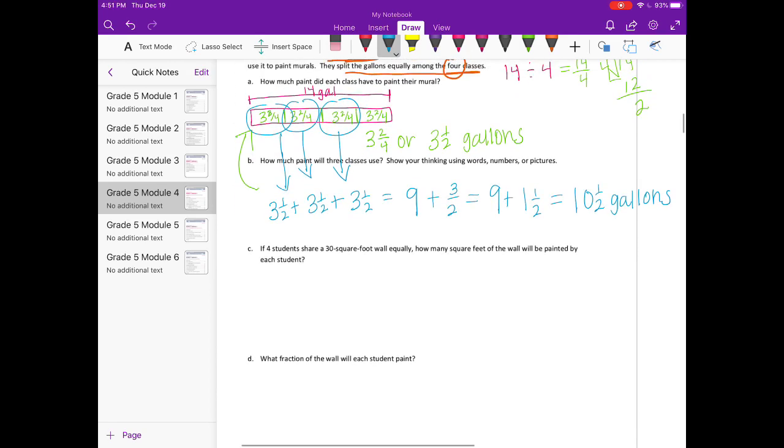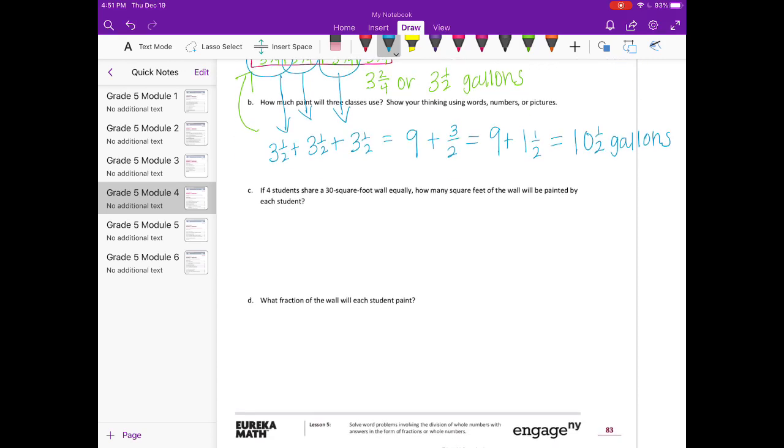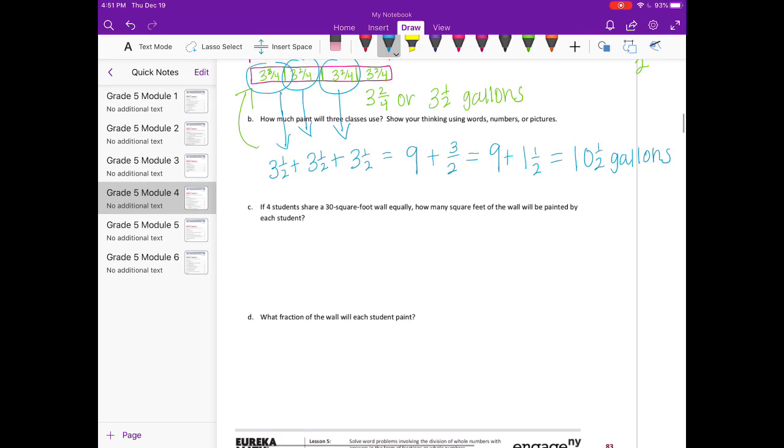Part C: If four students share the 30 square foot wall equally, how many square feet of the wall will be painted by each student? So now four students are sharing the wall equally. It's a 30 square foot wall, so we have 30 square feet that four students are sharing equally. That's going to be 30 fourths. We can draw it on here to represent that. So the whole is 30, split it into fourths. So 30 fourths, 30 divided by 4.